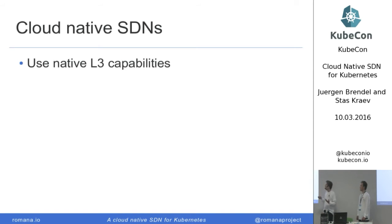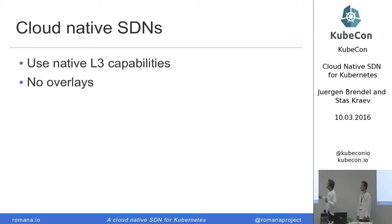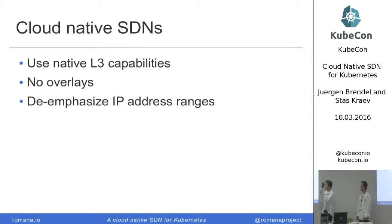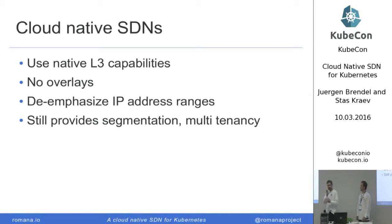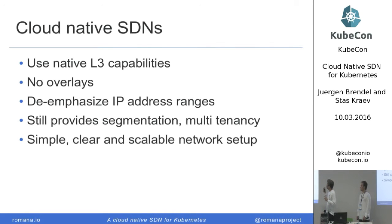With cloud-native here, we mean we only use layer three — because that's what our network hardware is really good at and really efficient. Only layer three, forget the overlays. You don't necessarily care about assigning particular IP addresses, because when your pods come up, you get whatever IP address. But we must still provide segmentation and multi-tenancy on the network. If you do this, you get a really clear, very native, very direct network setup — without mysteries and without hidden magic things happening.